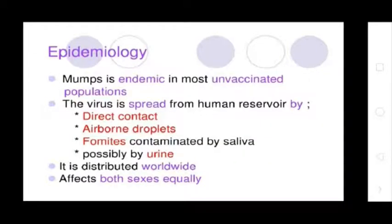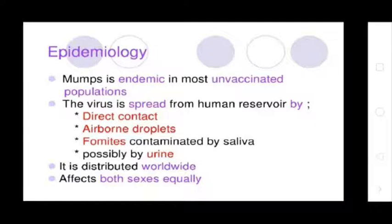Epidemiology of Mumps: Mumps is endemic in most unvaccinated populations. The virus is spread from a human reservoir by direct contact, airborne droplets, fomites contaminated by saliva, and possibly by urine. It is distributed worldwide and affects both sexes equally.